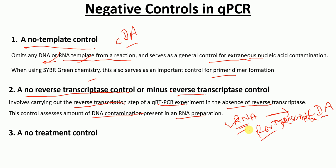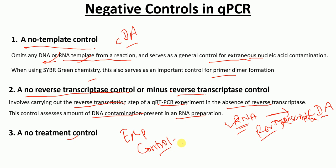The final type of control is called the No Treatment Control. If you have two samples — one experimental and one control — in the control sample you are not going to apply any treatment; you are going to leave it as is.